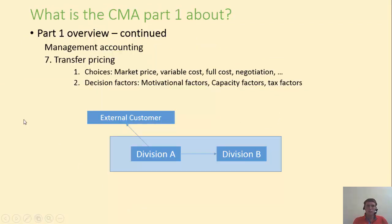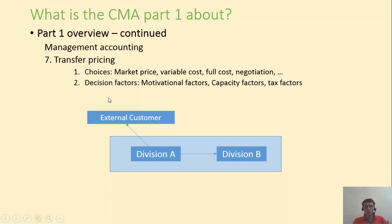We'll discuss transfer pricing — when one division within the business sells to another division that potentially also sells to external customers. We will discuss the different methods used for setting the price, including market price, variable cost, full cost, and so on. And we'll discuss the factors to consider when deciding on the best method to use, including motivational factors, capacity factors, and tax factors.